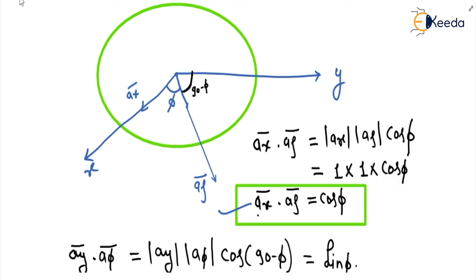Now to convert a vector we need to know the dot products: a_x dot a_rho, a_x dot a_phi, a_x dot a_z, a_y dot a_rho, a_y dot a_phi, a_z dot a_rho, a_y dot a_z, and a_z dot a_z. To calculate these dot products, we return to the figure. Here the x-axis direction is a_x, and the direction from origin to point P is a_rho. The angle between a_x and a_rho is phi.